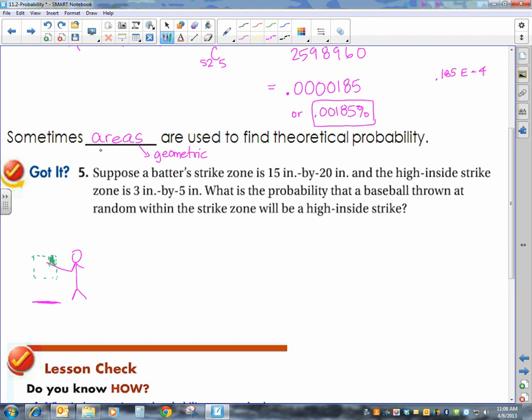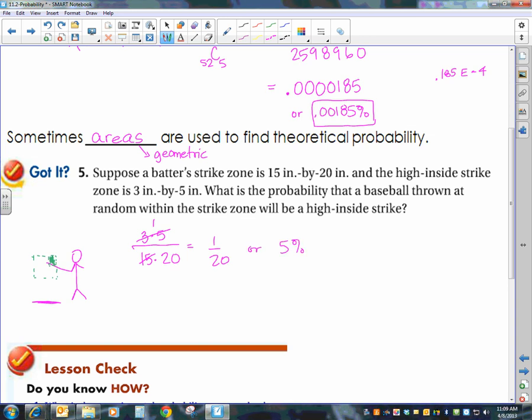So basically we're trying to find the probability that the pitcher gets it into that spot. So we're using area. So to find the area of the smaller rectangle, I got 3 times 5 over the area of the bigger rectangle, 15 times 20. And we simplify that. That's 15 right there. So this becomes 1 over 20 or 5%. So it's not very high. And that answer is that's the probability that a baseball thrown at random within the strike zone will be a high inside strike.